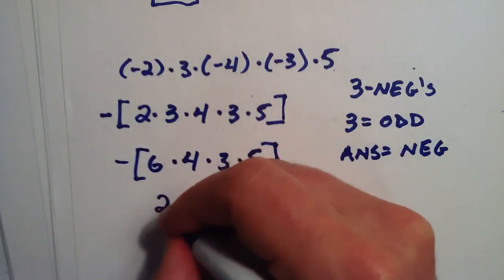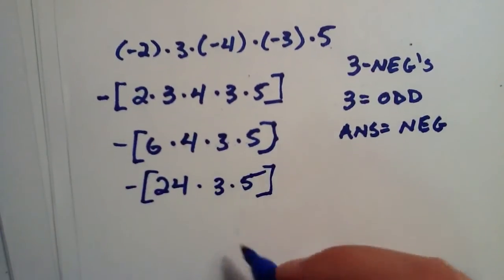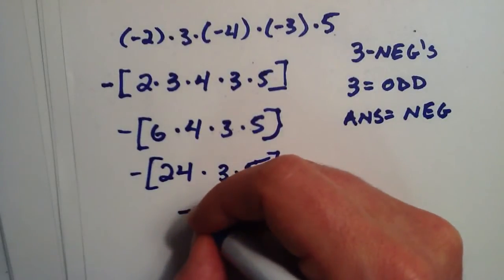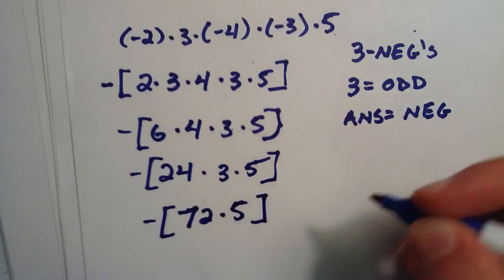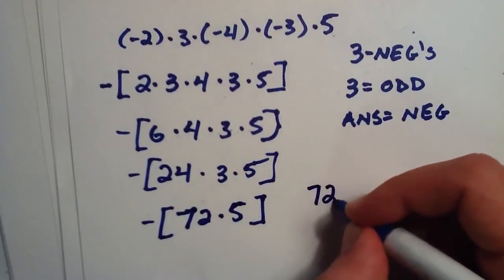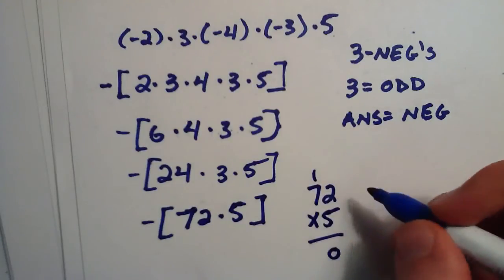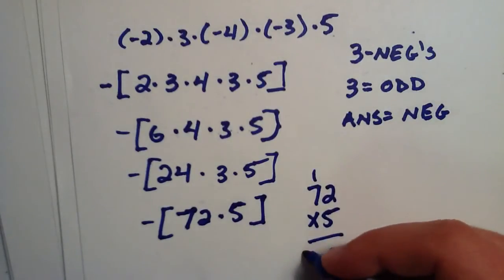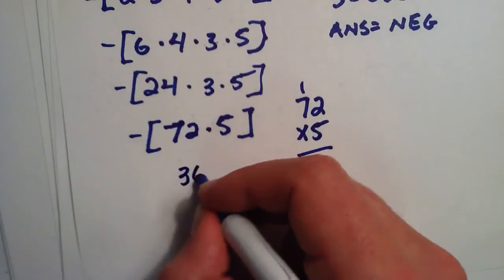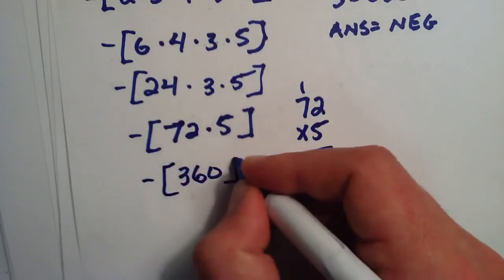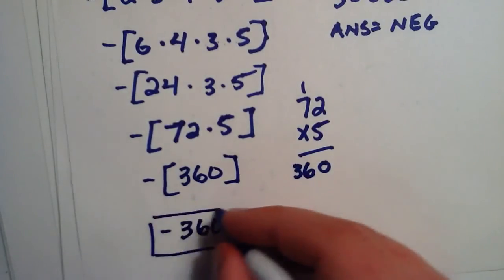6 times 4 is 24, by 3, by 5. 24 times 3 gives us 72 multiplied by the 5, and 72 by 5 gives us 5 times 2, which is 10, and 5 times 7 is 35, and we add the 1, 36. So 72 times 5 gives us 360, and that's going to be negative, negative 360. And that's our answer.